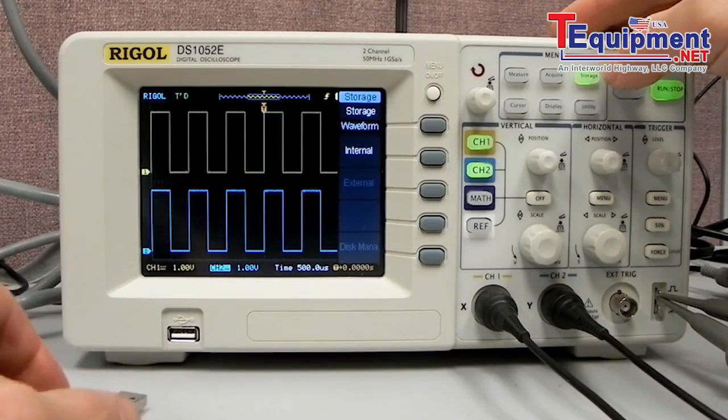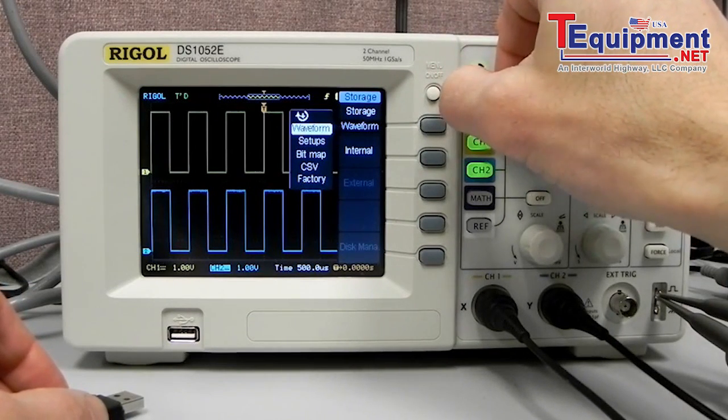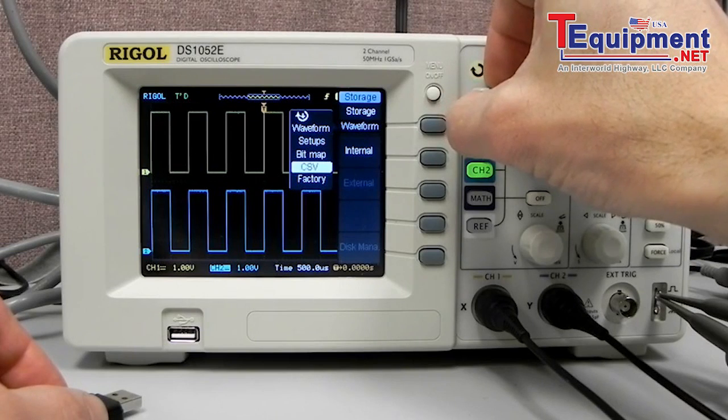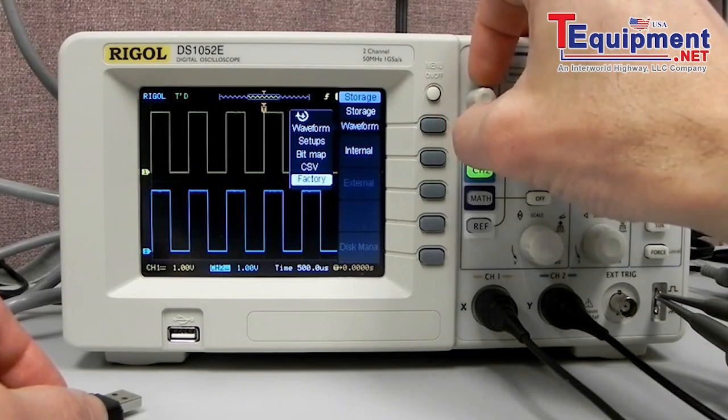Let's say I wanted to store that particular waveform. I hit the storage key and now I have a storage menu which I have waveforms, setups, bitmap, csv, as well as factory which returns us back to factory defaults.